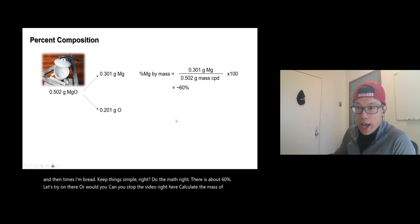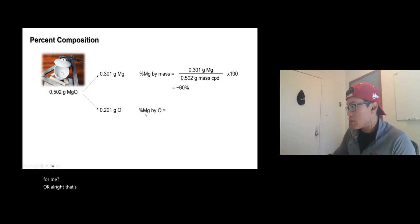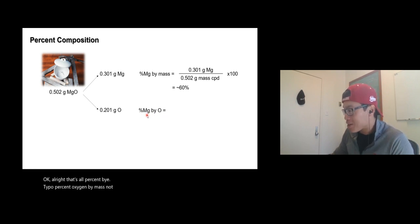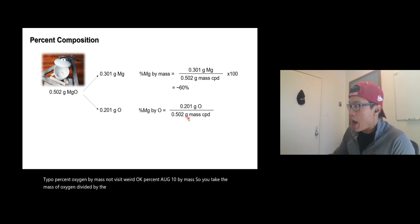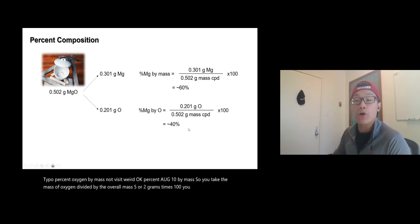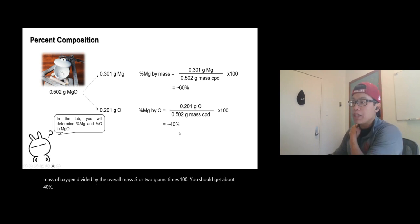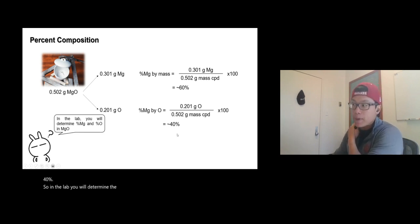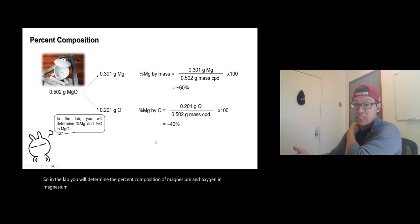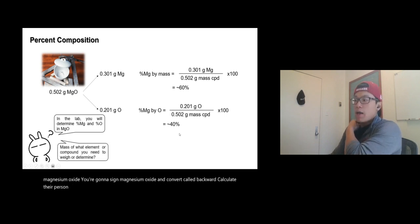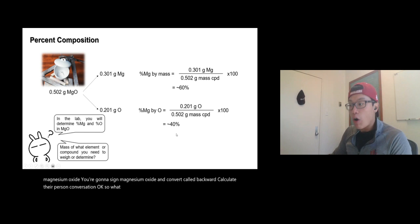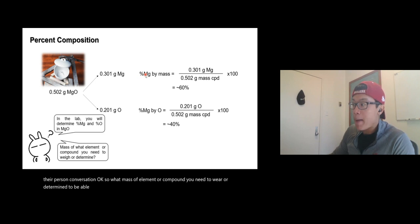Try it yourself — pause the video and calculate the percent oxygen by mass. You take the mass of oxygen divided by the overall mass of 0.502 grams, times 100 — you should get about 40 percent. In the lab, you will synthesize magnesium oxide and calculate the percent composition of magnesium and oxygen.